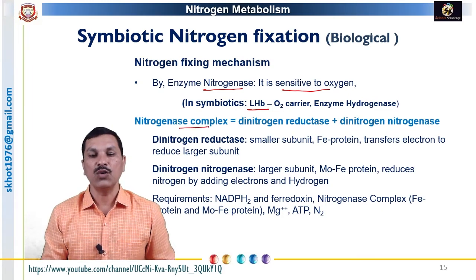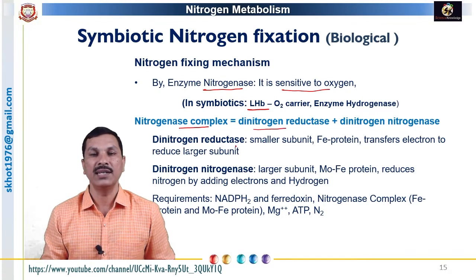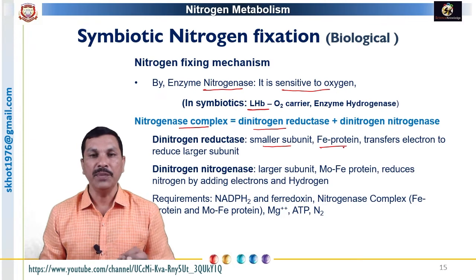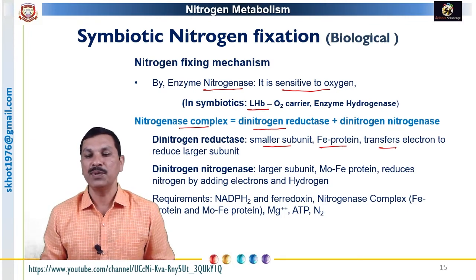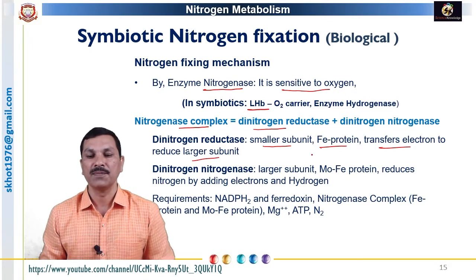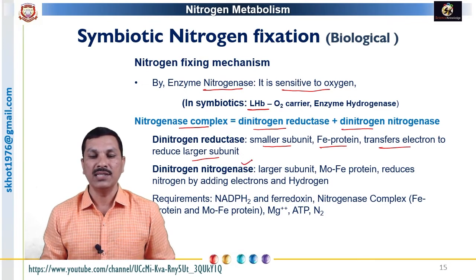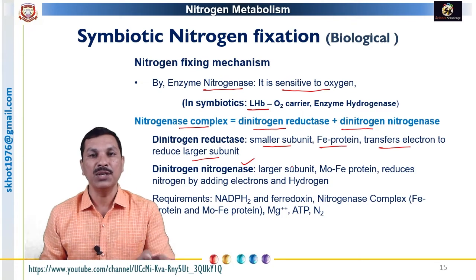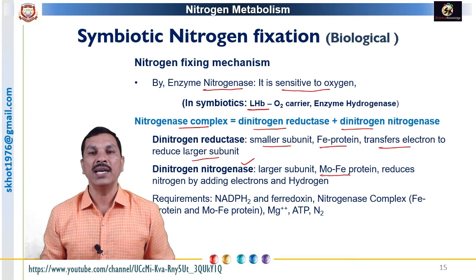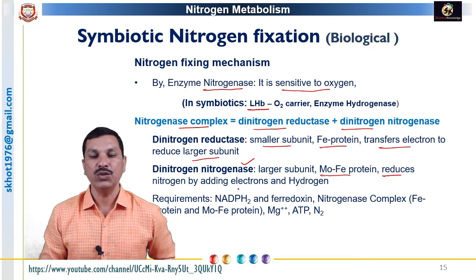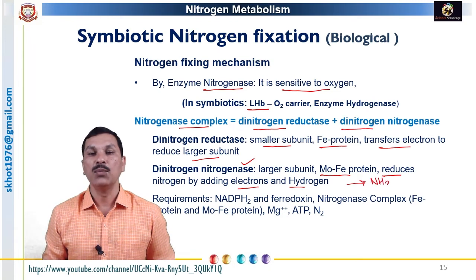The enzyme nitrogenase is a complex protein with two subunits. The first is called dinitrogenase reductase, a smaller subunit also known as the iron protein or Fe protein. The main function of the smaller subunit is to transfer electrons to the larger subunit. The second subunit is called dinitrogenase, the larger subunit, also known as the molybdenum-iron protein. The function of this protein is the actual reduction of nitrogen by addition of electrons and hydrogen, ultimately converting molecular nitrogen into ammonia.